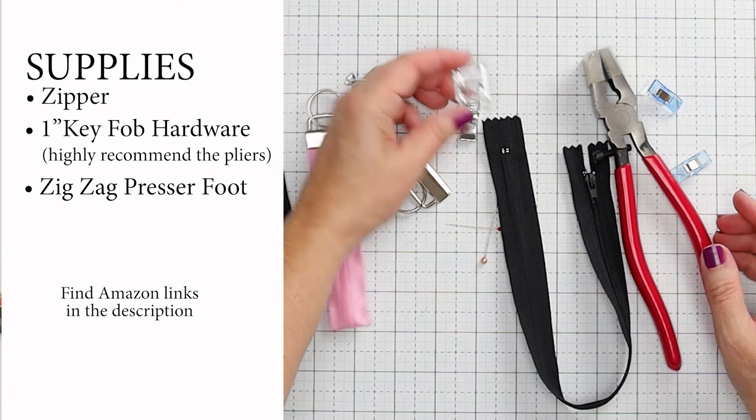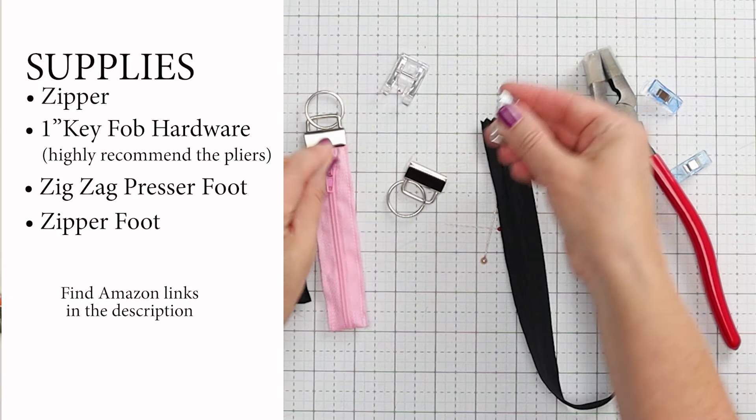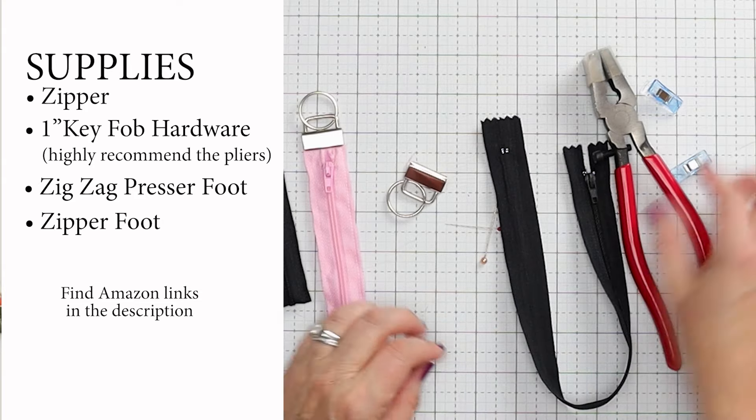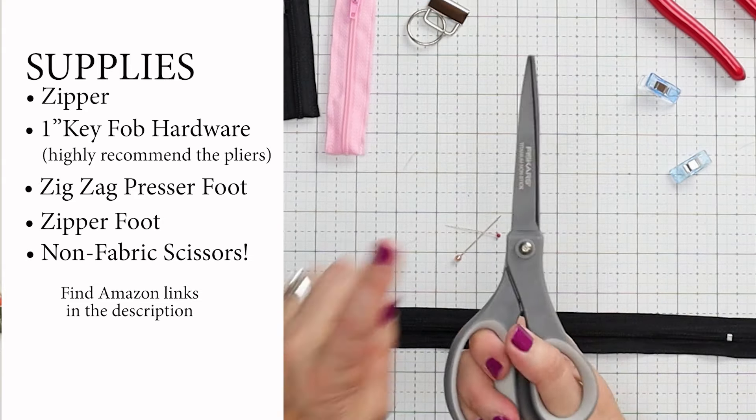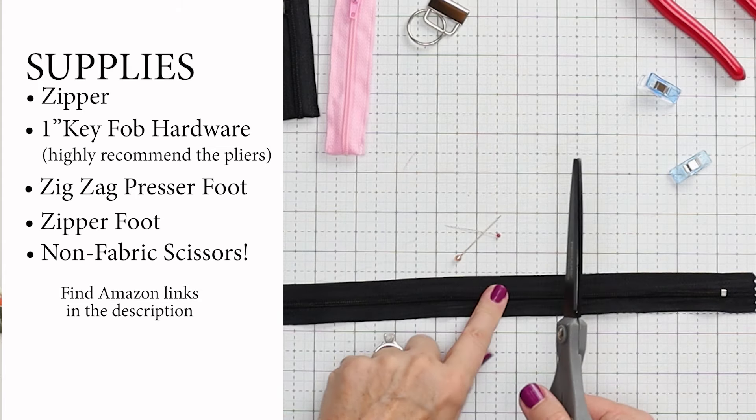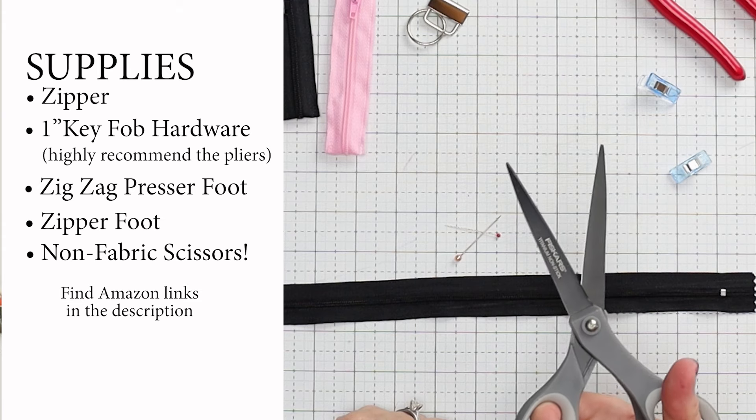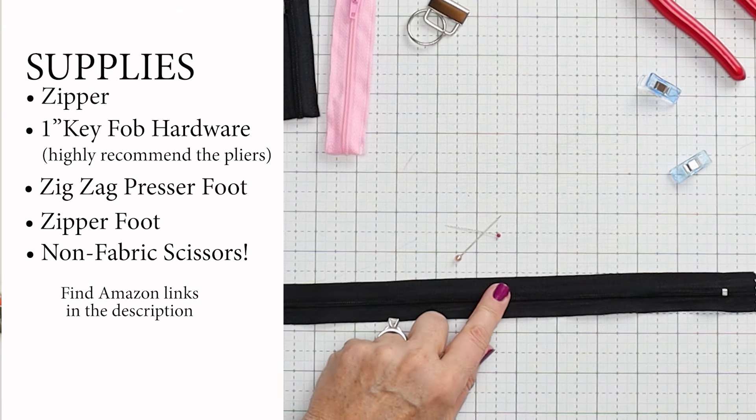Then you need a foot for your machine that can do zigzag, and a zipper foot. This is going to go together in no time. You also need non-fabric scissors - do not cut zippers with your fabric scissors or you're going to mess them up. These are just my everyday scissors. We'll use those to trim this after we do a little stitch.